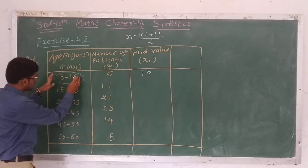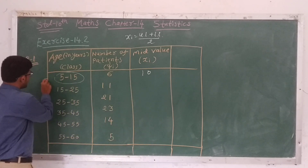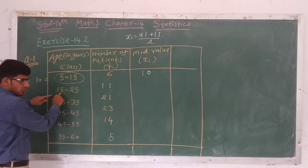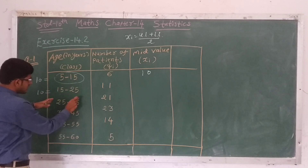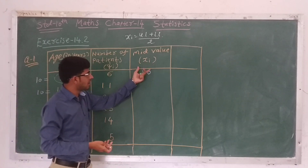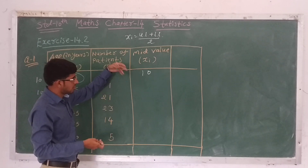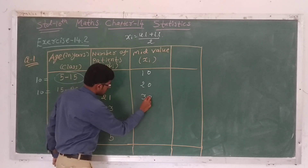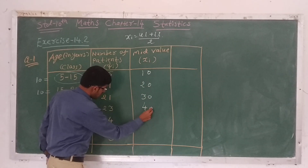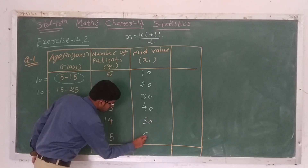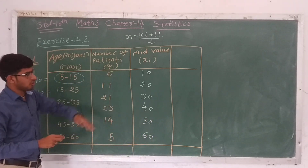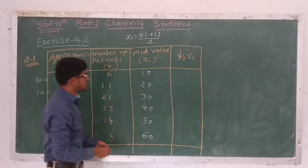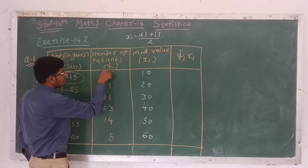For the first class 5 to 15, xi will be 10. We then find all xi values by simply adding 10 each time: 10, 20, 30, 40, 50, 60. Next we have to find fi·xi, so we simply multiply fi with xi.